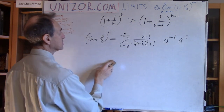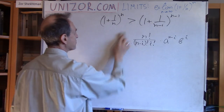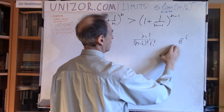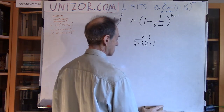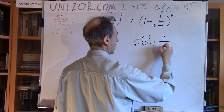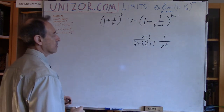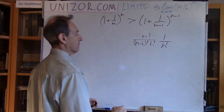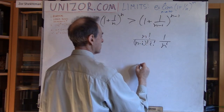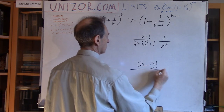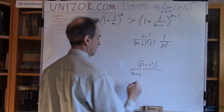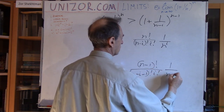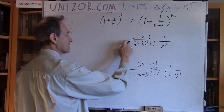What's my i-th member on the left? Well, a is 1 so I don't need that, and b is 1/n, so this is n factorial divided by (n minus i) factorial and i factorial, times (1/n) to the power of i. On the right, it's correspondingly (n-1) factorial divided by (n minus i minus 1) factorial times i factorial, times (1/(n-1)) to the i. So I would like to prove that the left member is greater than the right member.